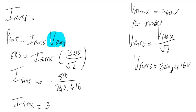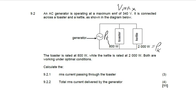This gives us 3.33 A. So I_rms for the toaster is 3.33 amps. You can use any formula to find those values.